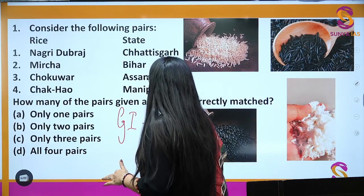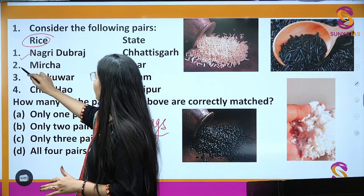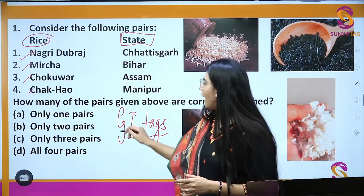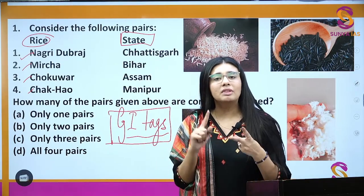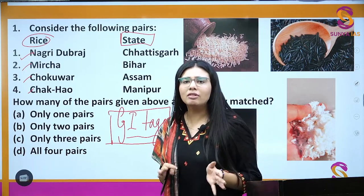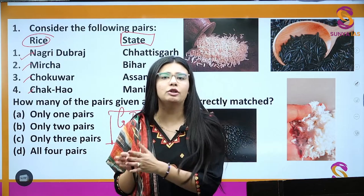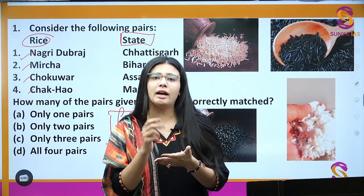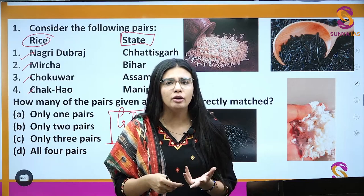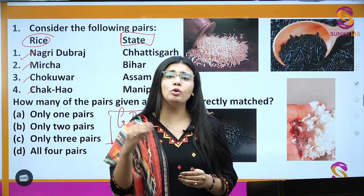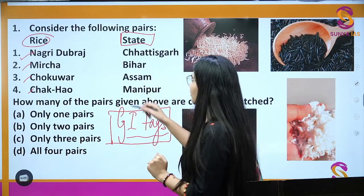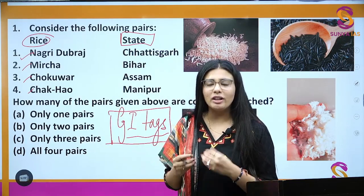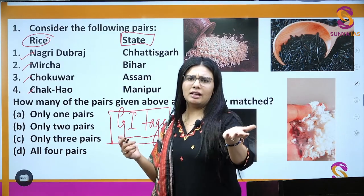Our first question is on GI tags. Different types of rice names are given here with respect to state because they all got the GI tag this year. From previous papers, we have seen UPSC repeatedly asking questions with respect to GI tags and Ramsar sites. It is important to remember which GI tag — in agriculture, handicraft, handloom, or different categories — belongs to which state.